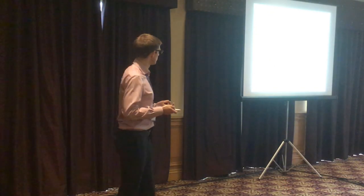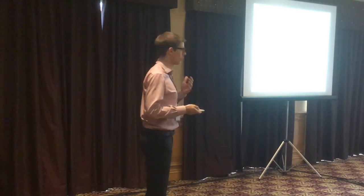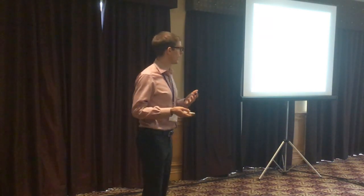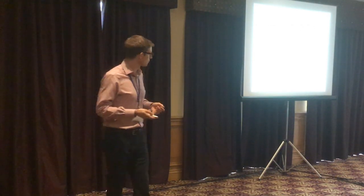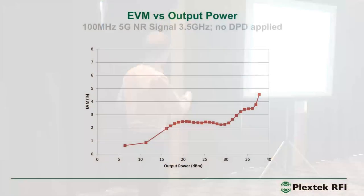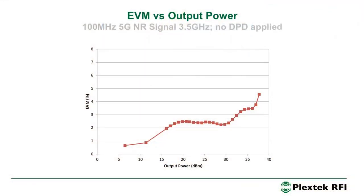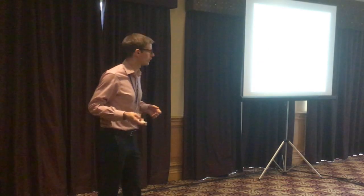We also measured the ACLR. No DPD was applied to our signal, so we would be able to improve linearity performance through the use of DPD, but this shows that the amplifier is linearisable. We also measured EVM: at average power levels of about 20 to 30 dBm it's about 2.5%, and at 36 dBm — 4 watts of average output power — we're getting about 3.5%. Again, no DPD was applied.